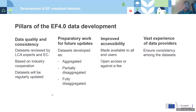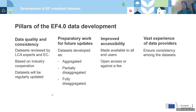The datasets are being created in three formats: fully aggregated, partially disaggregated, and fully disaggregated — which enhances transparency. On accessibility, the EF 4.0 datasets will be either open access or accessible at a proportional fee, available to all end users including for research and academia, which is not currently possible under the EF 3.1 license.